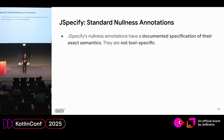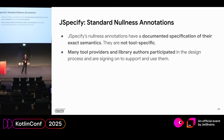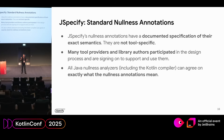The rest are tool-specific and not a standard. JSpecify's annotations are a standard because they have a documented specification — not only of how to use them, but also a specification for tool providers and language analysis tools on how to interpret those annotations and what the semantics are. A lot of tool providers and library authors participated in this working group to design these annotations, and as a result we expect that eventually all Java nullness analyzers will understand JSpecify's annotations in the same way. They will agree on exactly what a nullness-annotated API really means.